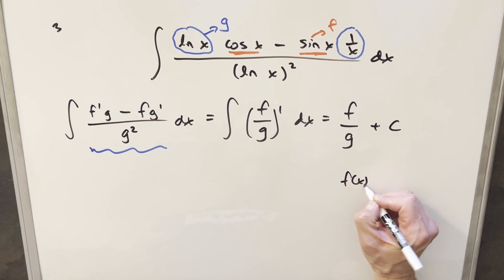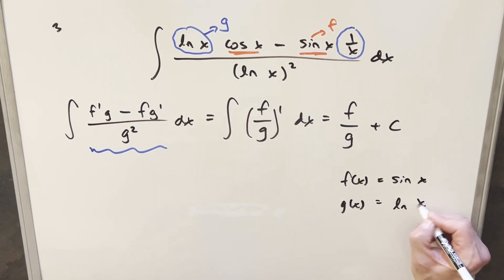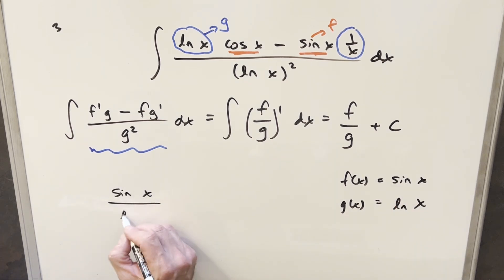So we're saying our f of x, or just this f, is going to be sine x, and our g of x in this is going to be natural log x. And so our solution is just going to be this f over g. So our solution to this is just going to be sine x over natural log x plus c, and that's it.